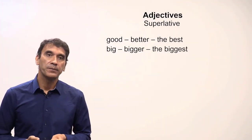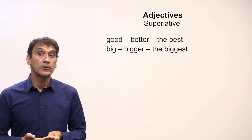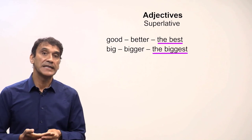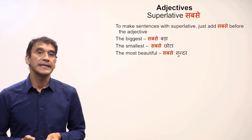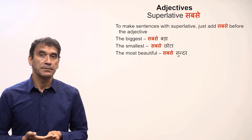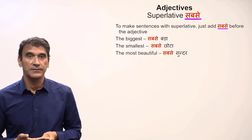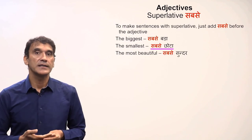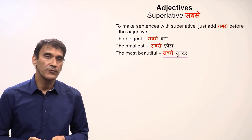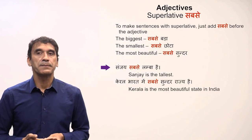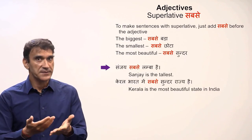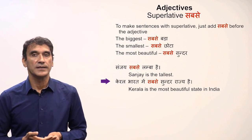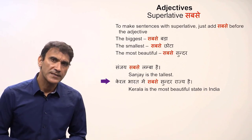Finally, the superlative form. In English, the superlative of 'good' is 'the best', and the superlative of 'big' is 'the biggest'. In Hindi, the superlative is made simply by adding the word 'sab se' before the adjective. For example: 'sab se bada' is 'the biggest', 'sab se chota' is 'the smallest', and 'sab se sundar' is 'the most beautiful'. Example sentences: 'Sanjay sab se lamba hai' — Sanjay is the tallest. 'Kerala Bharat mein sab se sundar rajya hai' — Kerala is the most beautiful state in India.